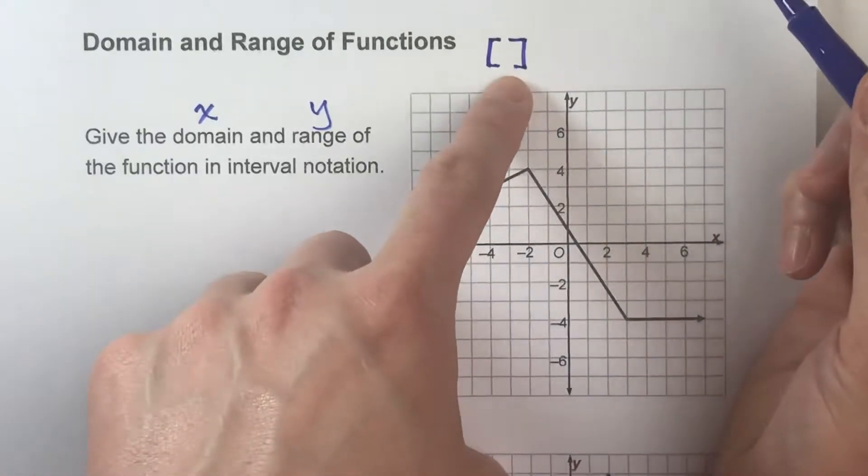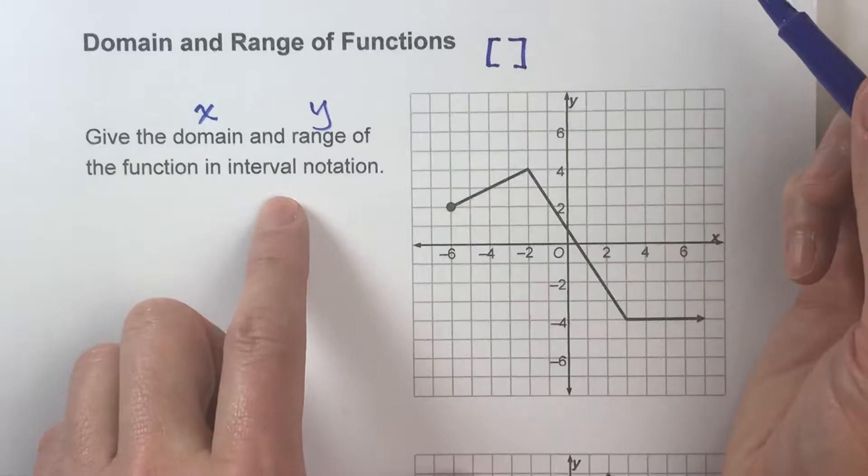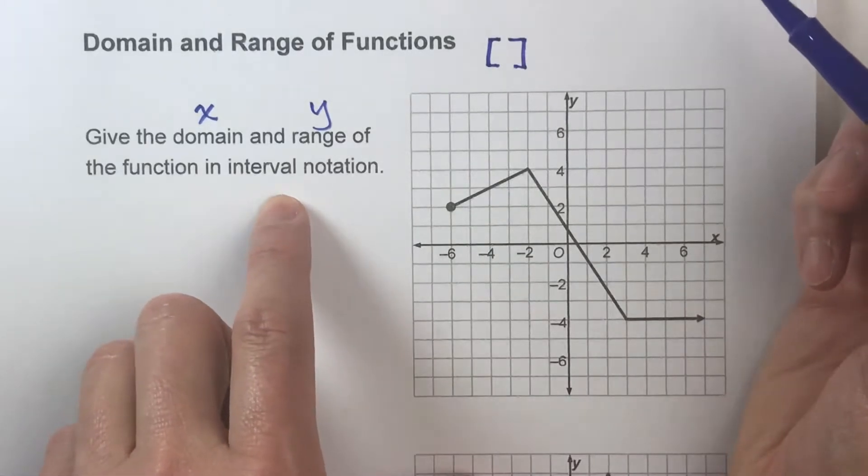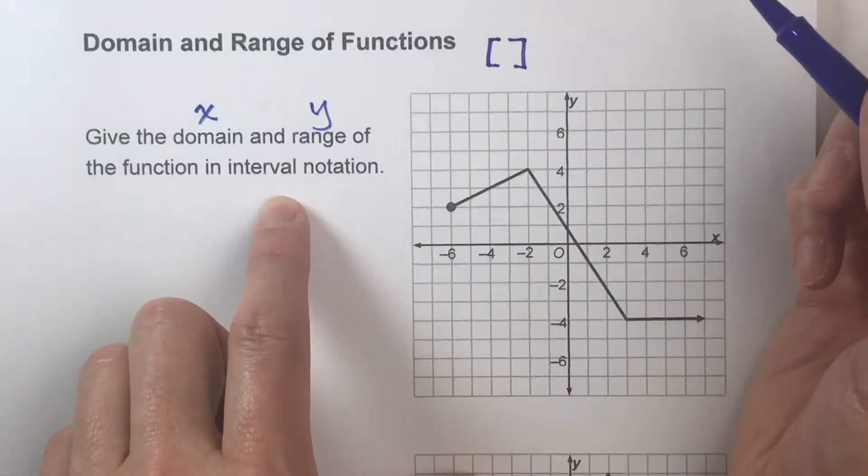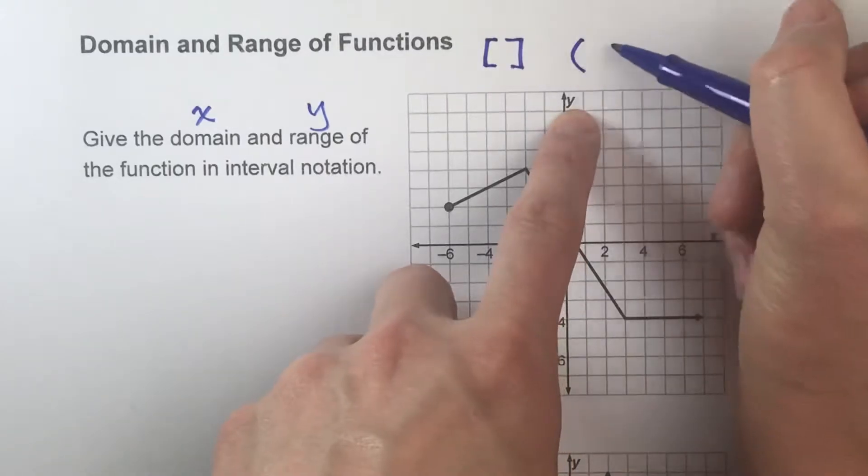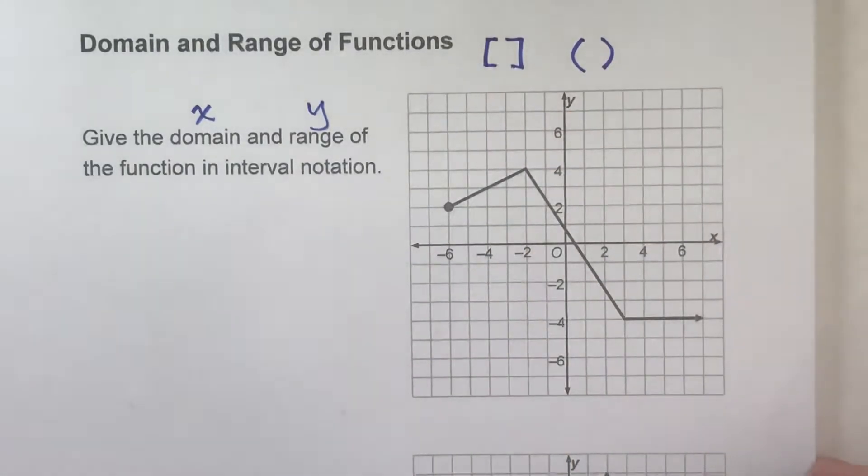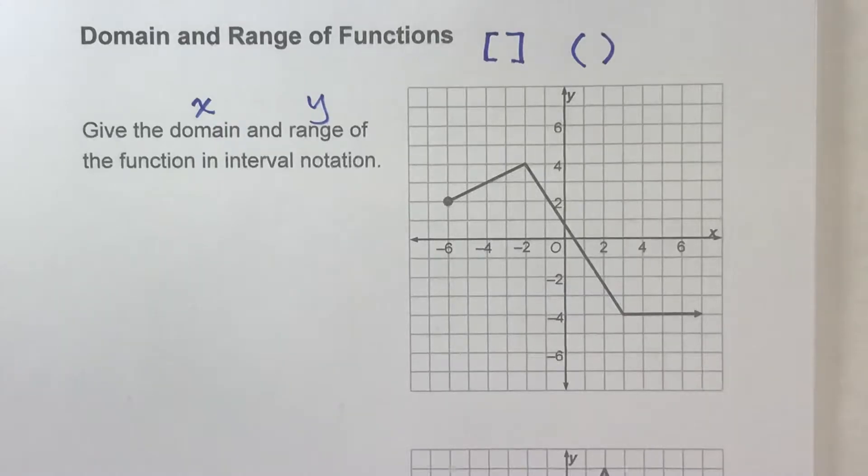If so, we would use the brackets. Or if they can go up to but do not include that actual number, in that case, we would use the parentheses. And it's best to see these with an example.